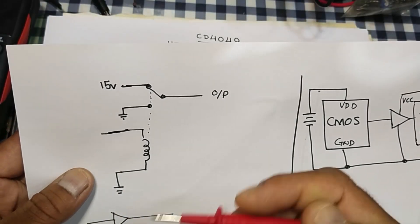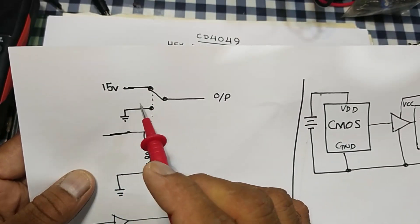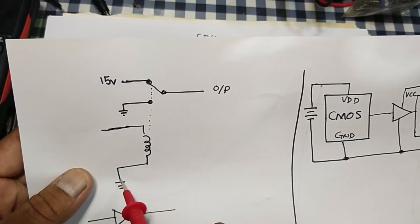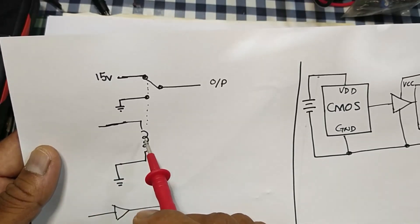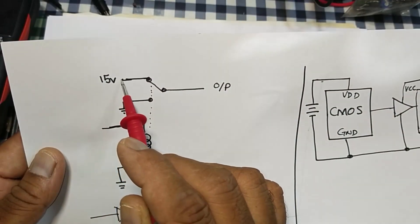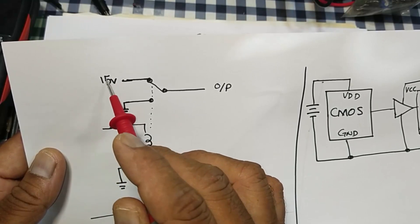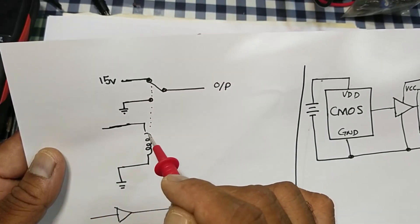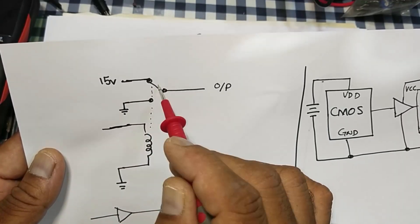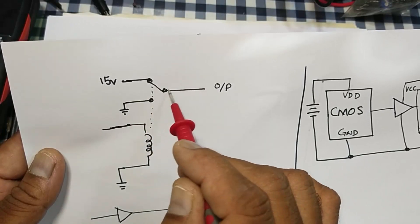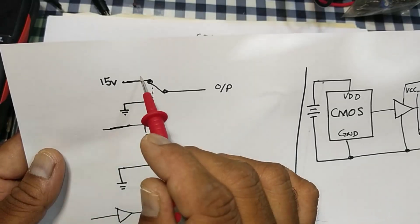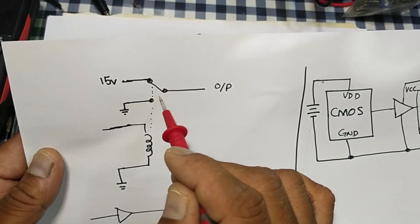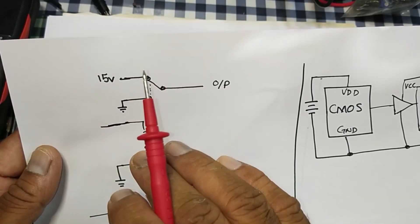How it works: it inverts the signal. We can say it is working like a relay. When there is no signal — zero volts at input — the coil is off. If we configure the normally closed contact connected to 15 volts, it will give 15 volt output for zero volt input. If we apply 15 volts to drive the relay, it closes the normally open contact to ground, giving a ground output. So zero volt input gives 15 volt output, and 15 volt input gives ground output — the signal is inverted.